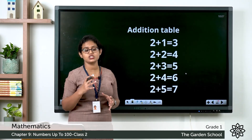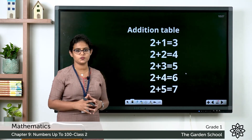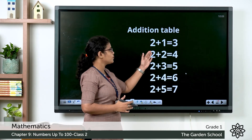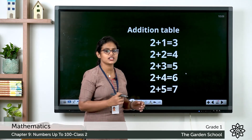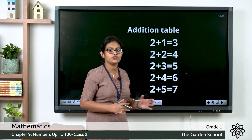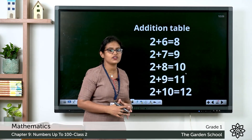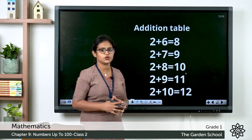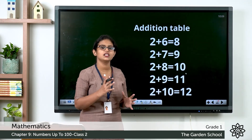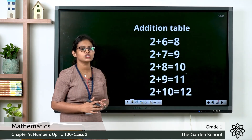So do you all remember the addition table that we learned for number 1? Today we are going to revise the addition table of 2. Repeat along with me: 2 plus 1 equals 3, 2 plus 2 equals 4, 2 plus 3 equals 5, 2 plus 4 equals 6, 2 plus 5 equals 7, 2 plus 6 equals 8, 2 plus 7 equals 9, 2 plus 8 equals 10, 2 plus 9 equals 11, 2 plus 10 equals 12. You need to repeat this addition table of 2 two times.